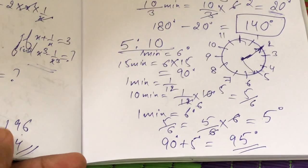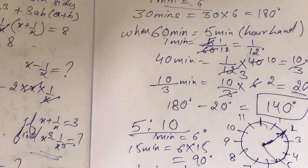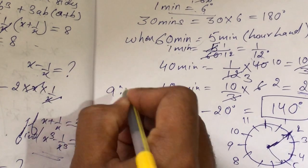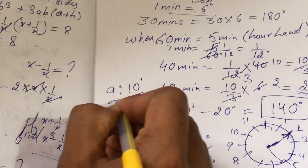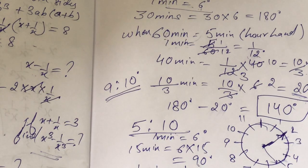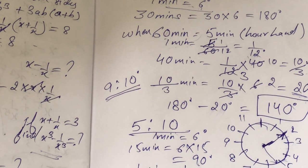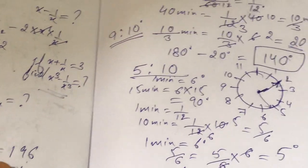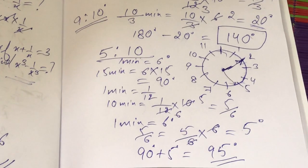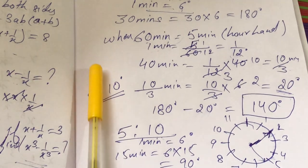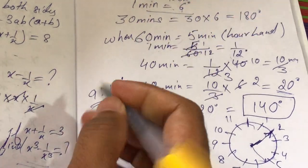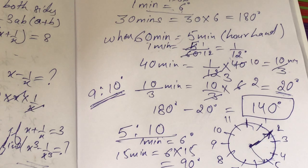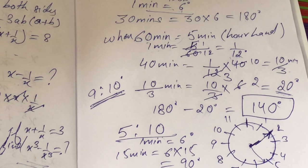Now I will give you a question to try. When it is 9:10 — when 10 minutes have passed after 9 o'clock — what is the angle between the hour hand and the minute hand? Try to watch the video on repeated mode. If you try to understand this concept, you will be able to solve it. Write your answer in the comment section.